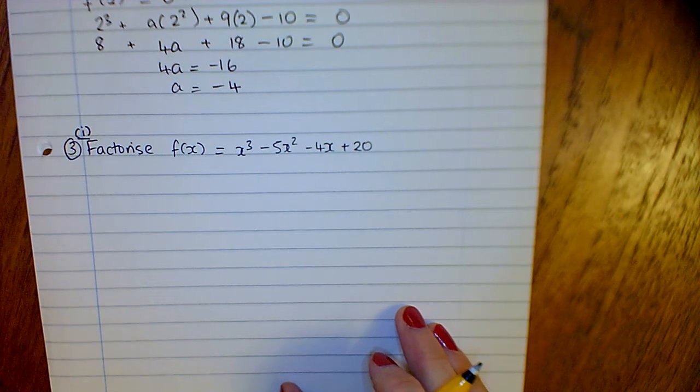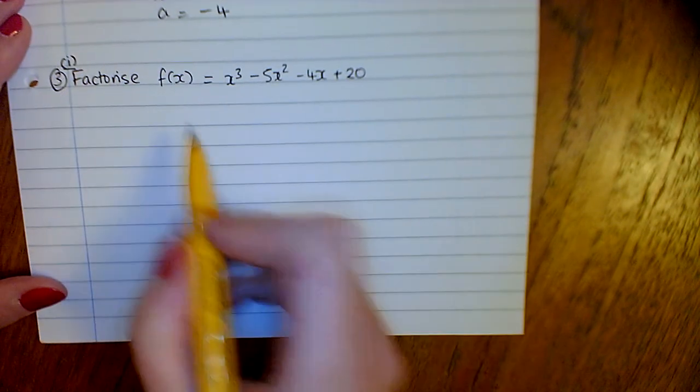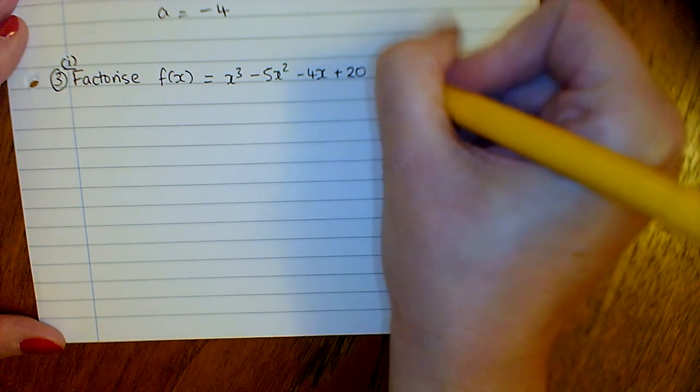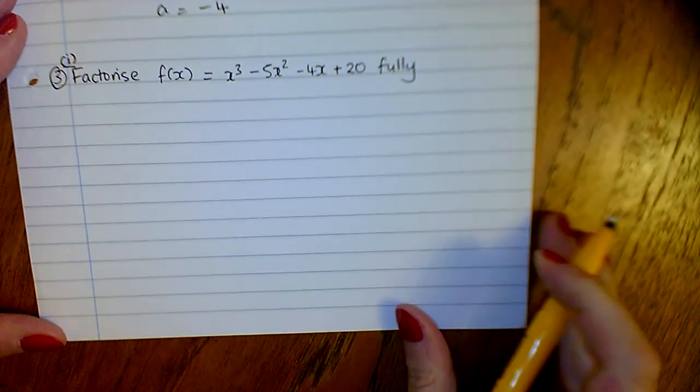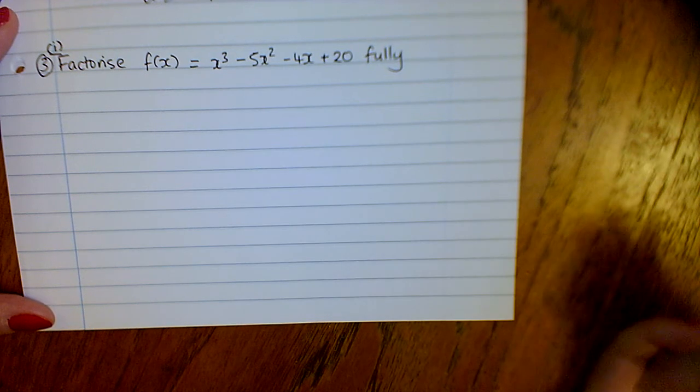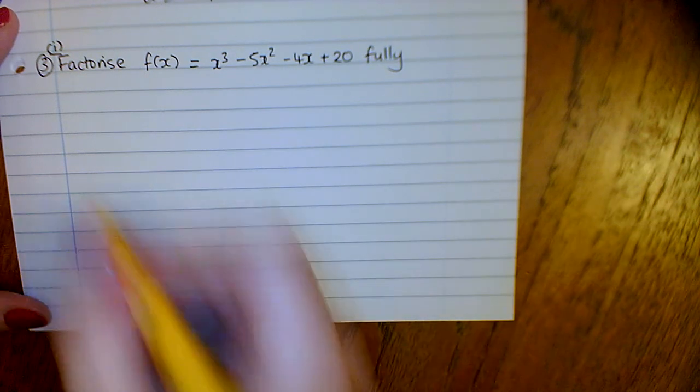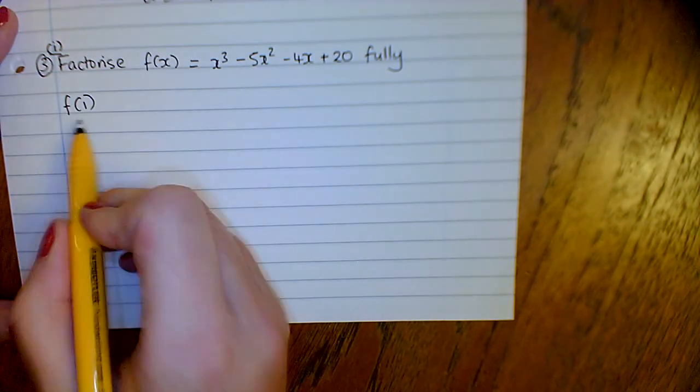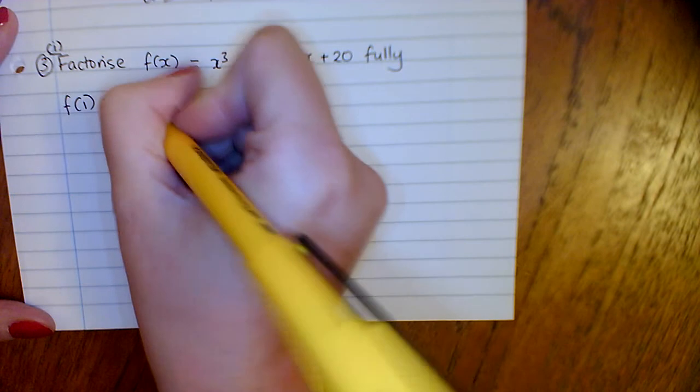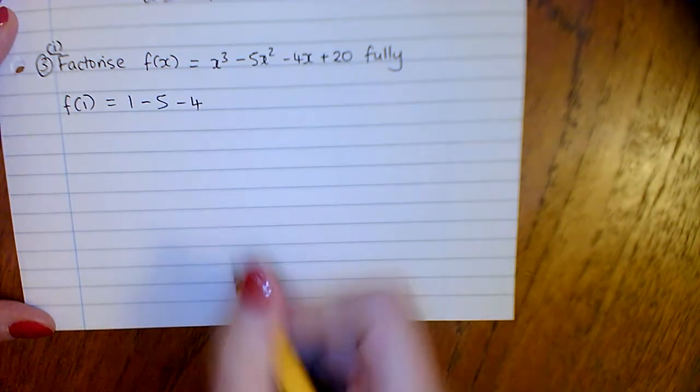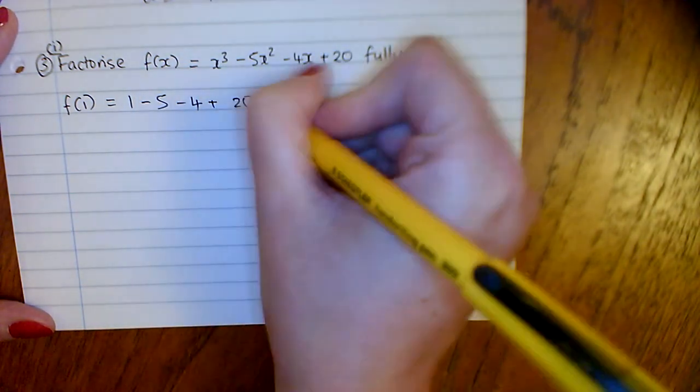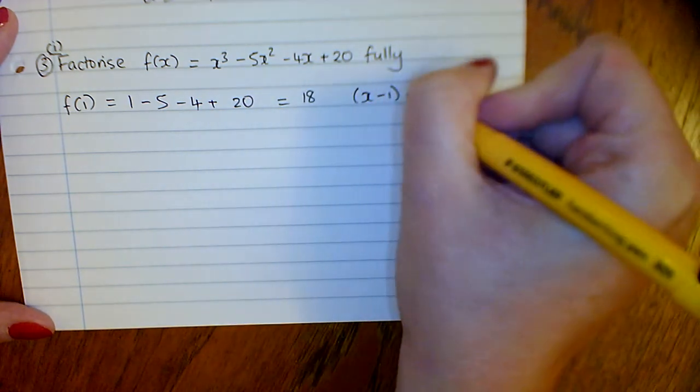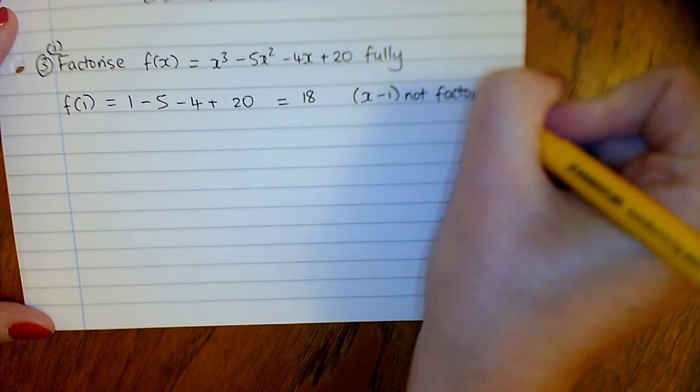Number three, we'll do two parts. Factorize f of x equals x cubed minus 5x squared minus 4x plus 20, and sometimes it'll say factorize fully. The first thing we'll do—it isn't telling us what the factor is—so we'll make some trial and improvement. Put in f of 1: 1 minus 5 minus 4 plus 20, that's 18. So x minus 1 is not a factor.